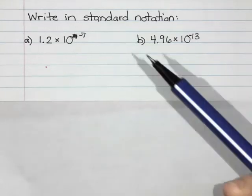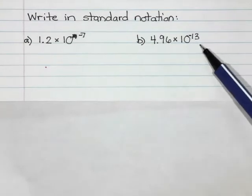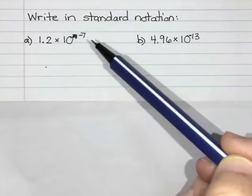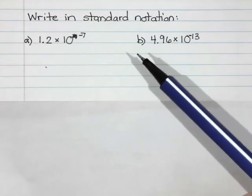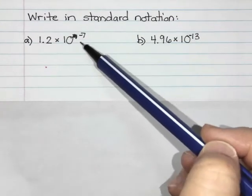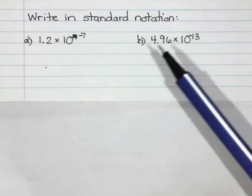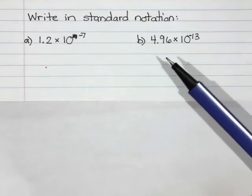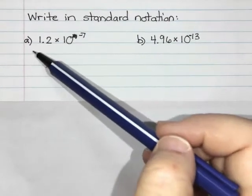For our last set of examples, we're going to take some small numbers that are written in scientific notation and expand them out. How do I know that these are small numbers? They have negatives in their exponents, which tells us we're dividing, which is what's going to make that number quite small.